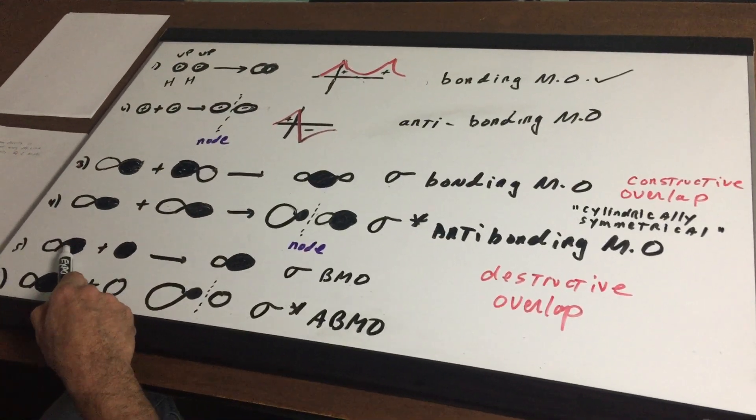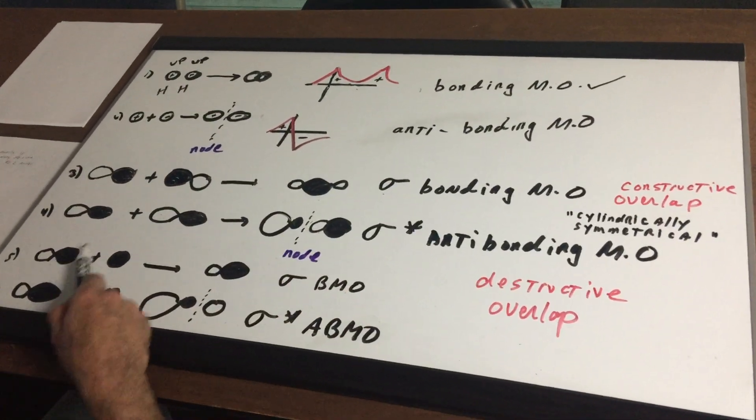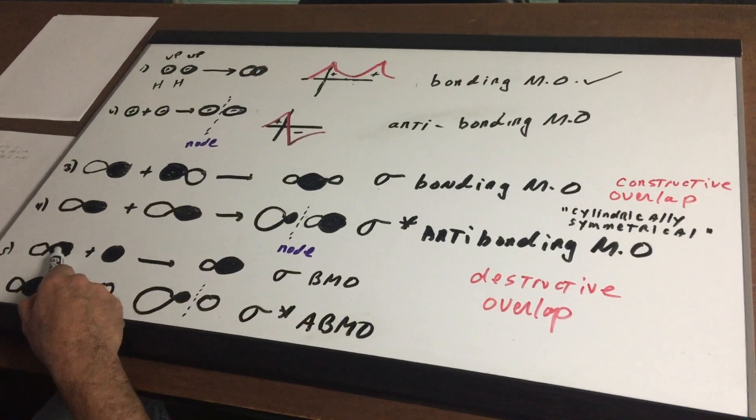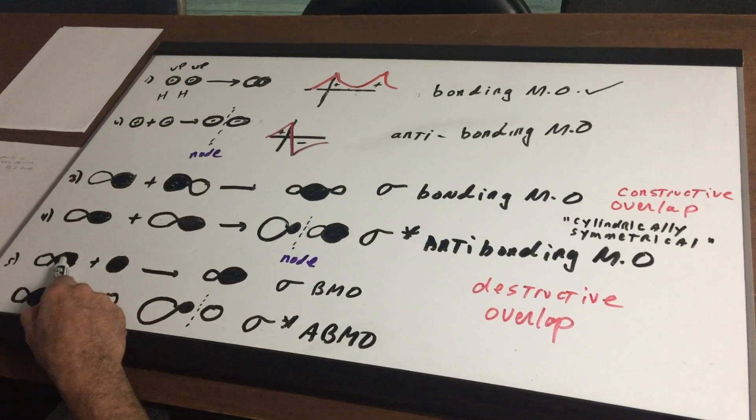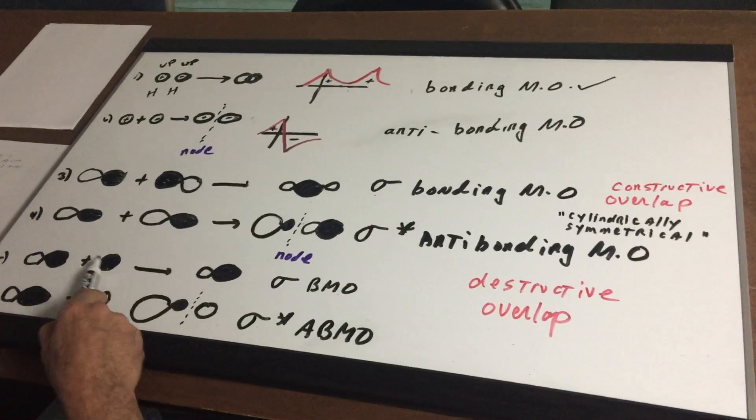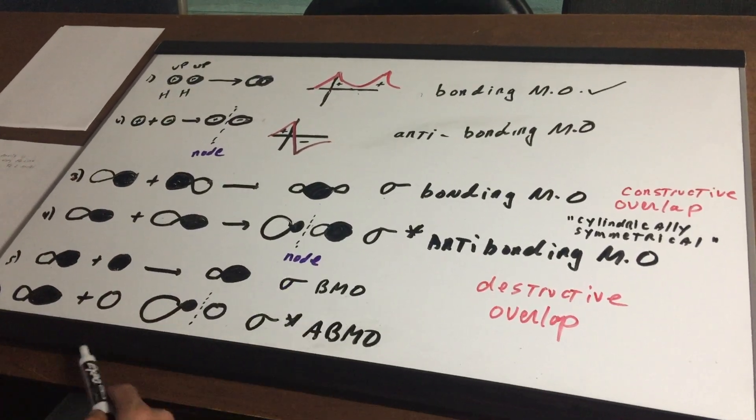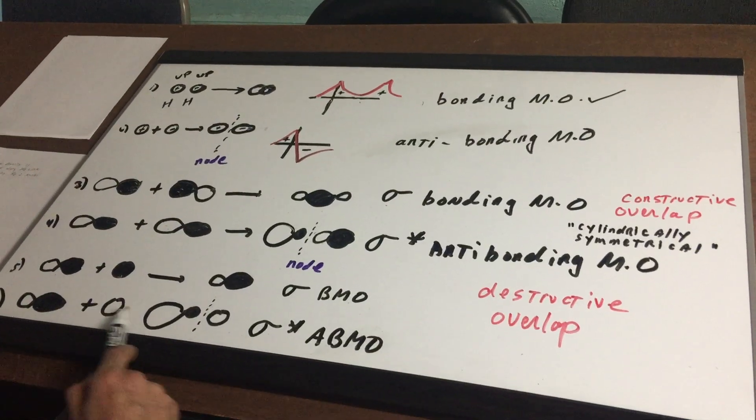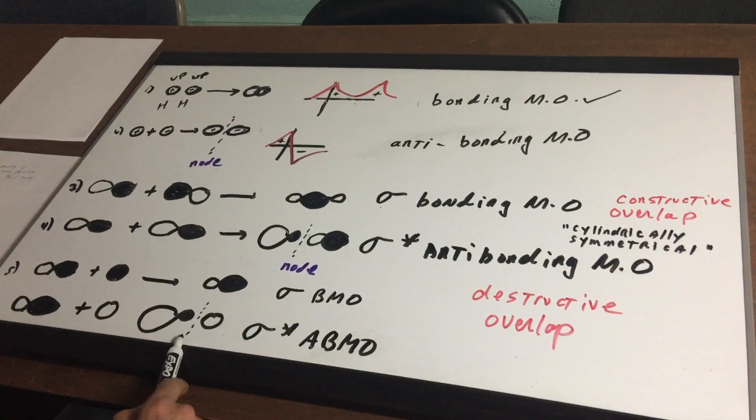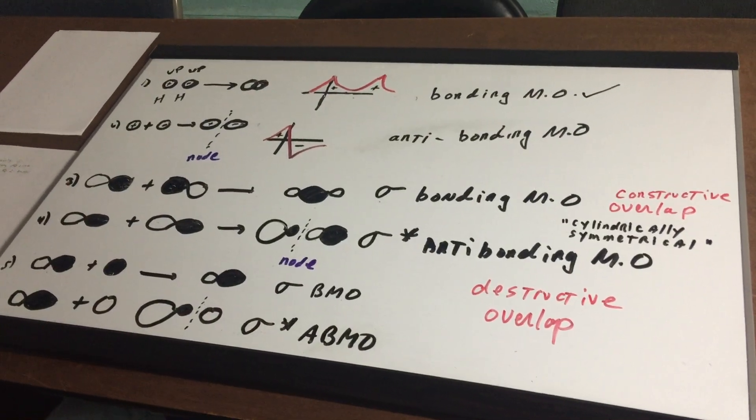Once again you can also have a sigma bond between not only say p orbitals but you can have s orbitals, but between s and a p. So here the two colors meet and we would form a sigma bonding molecular orbital. Here they don't meet and there's our node and we would get sigma star anti-bonding molecular orbital.